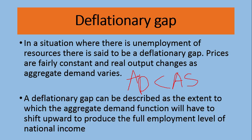A deflationary gap describes the extent to which the aggregate demand function has to shift upward to produce full employment. If demand is, say, 100 units but the country has produced 110 units, there is a surplus of 10 units. To sell the surplus, companies will have to decrease the price. To avoid losses, companies will reduce production — producing 100 units instead of 110 — keeping some resources idle or unemployed.